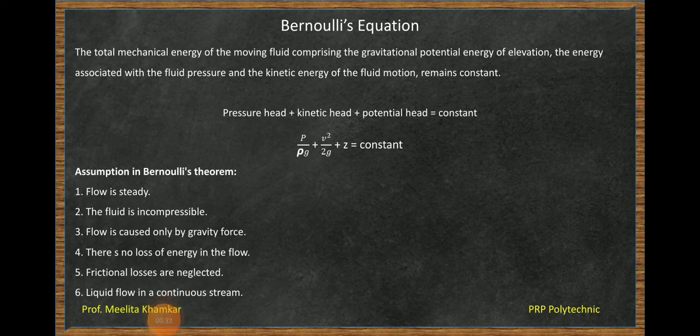In the previous video, we discussed that the pressure head plus kinetic head plus potential head is equal to constant. That is P by rho g plus V square by 2g plus z is equal to constant. So in this video, we are going to discuss the applications of Bernoulli's equation.